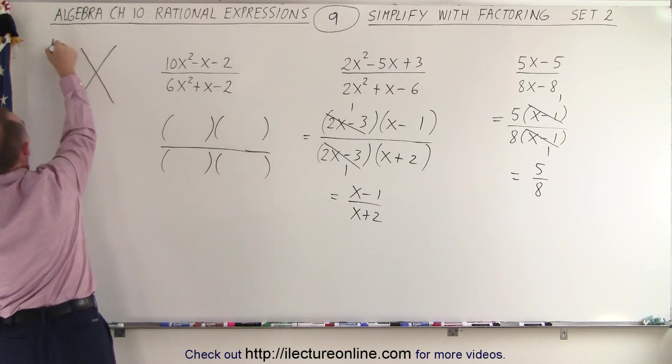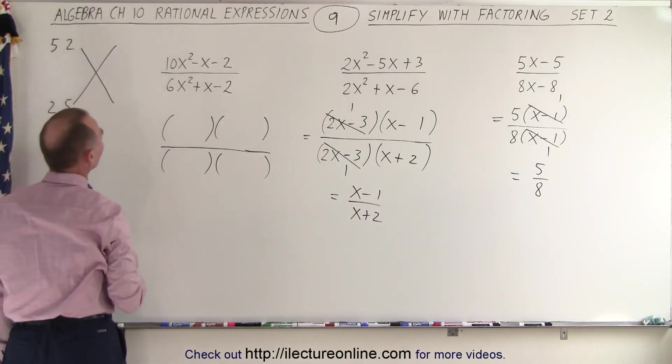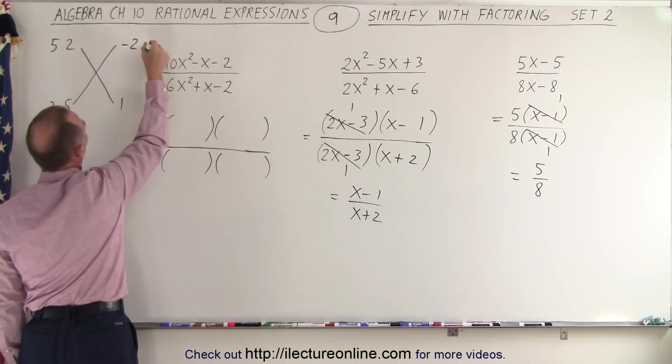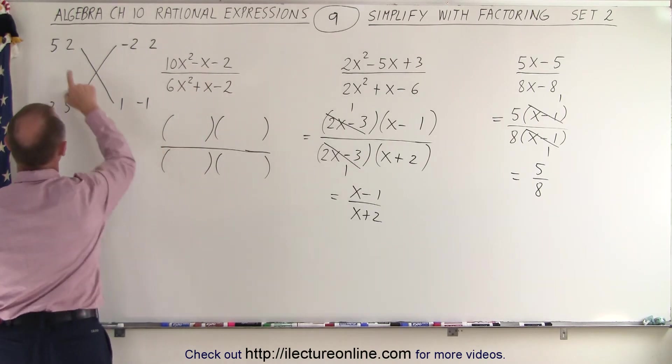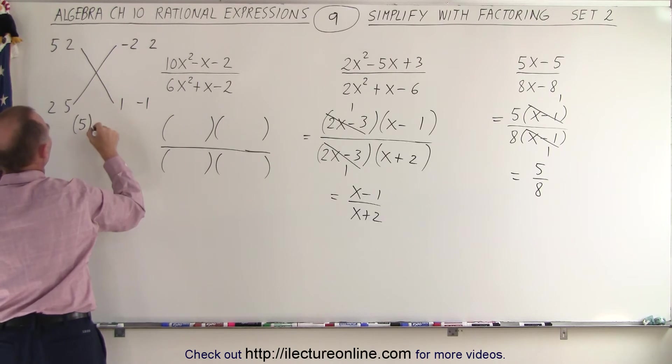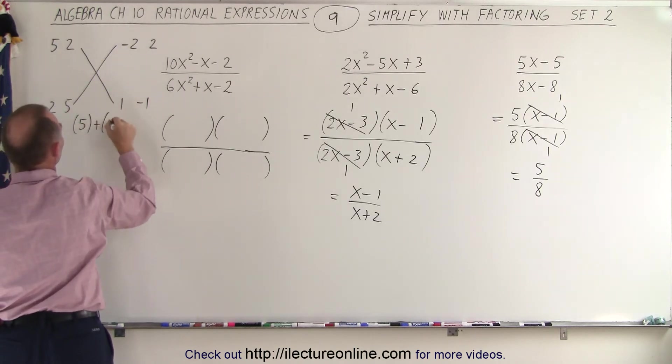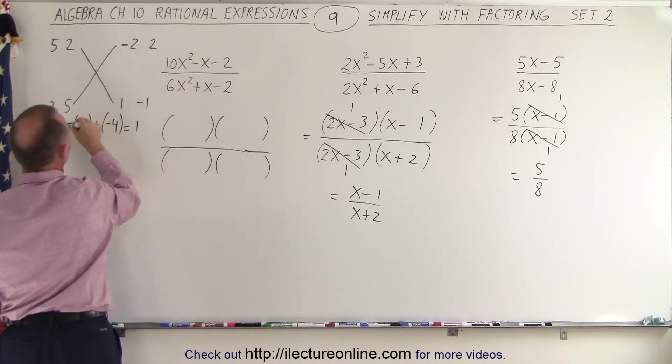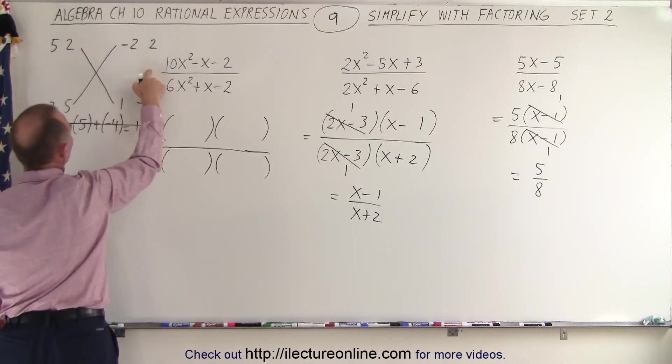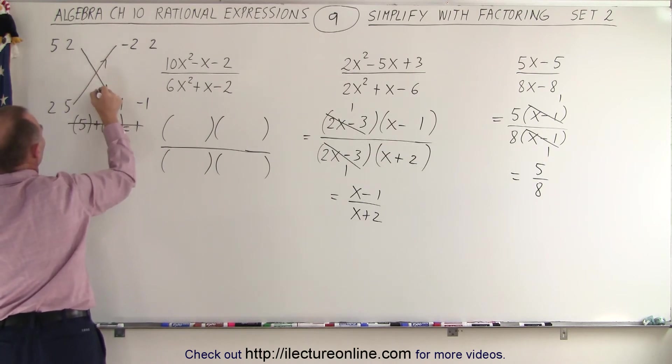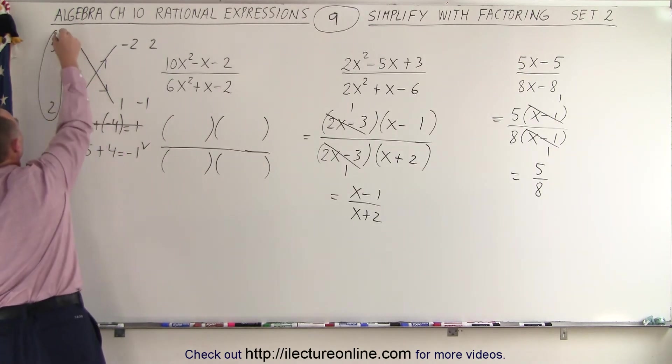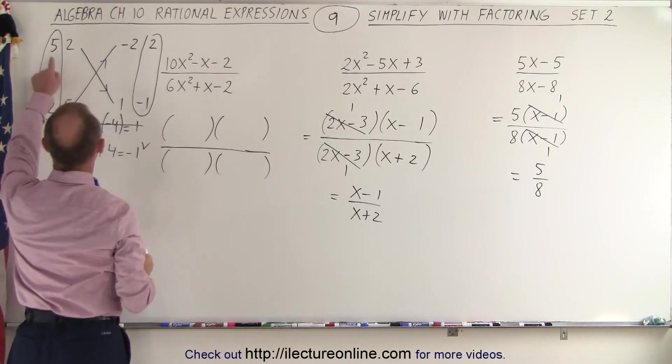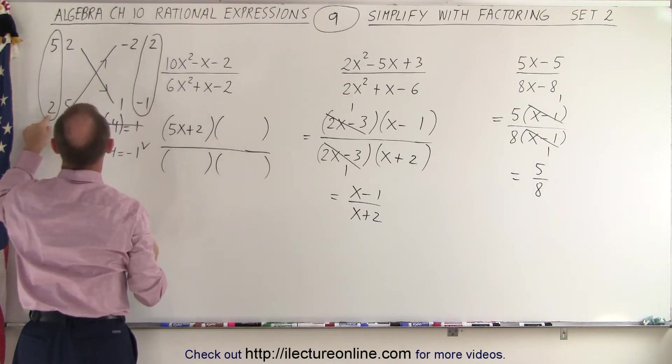On the first one, to get 10, we have a 5 and a 2, or a 2 and a 5 as the most likely candidates. To get negative 2, we have a negative 2 and a positive 1, or a positive 2 and a negative 1. Now which combination will give us the negative 1? Well, 5 times 1 gives us 5, and then we add to that a 2 times a negative 2, which is a negative 4, which is positive 1, which is not the right combination. How about if we try the first two numbers with the next two when we reverse the sign? So 5 times a negative 1 is negative 5, plus a 2 times a 2 gives us 4, which is a negative 1, which is what I want because I have a negative x there. So we end up with 5x plus 2, and we end up with 2x minus 1.